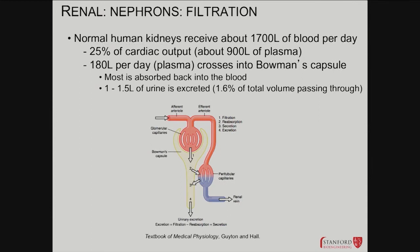The kidneys receive an enormous fraction of cardiac output given their size — about 25% of total blood flow. So the renal artery is an extremely highly trafficked corridor. Think about it: per day, about 180 liters of plasma actually crosses into Bowman's capsule. The vast majority is absorbed back, with only about one to one and a half liters of urine produced.